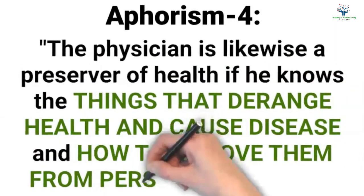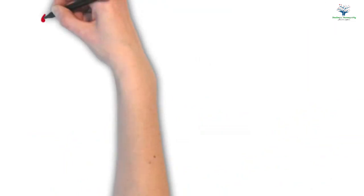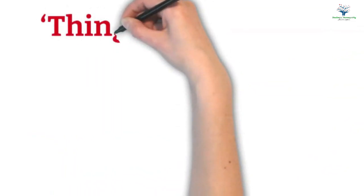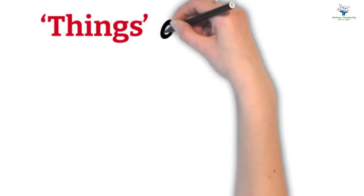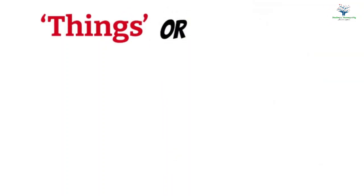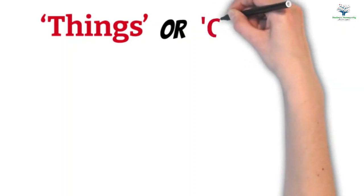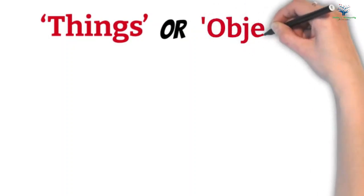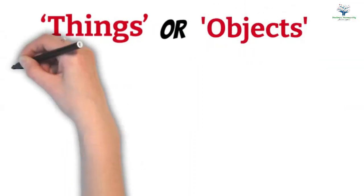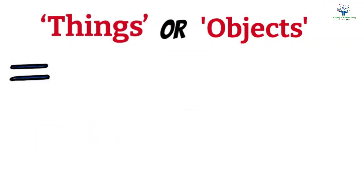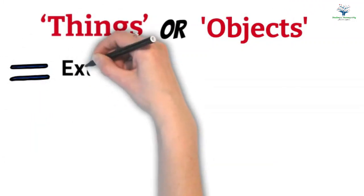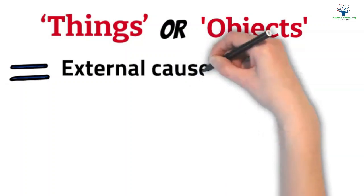Now what are these things that Hahnemann has mentioned in this aphorism? Kent called these as objects that derange health. Then what are these things or objects? Are these the external causes or the material or pathological changes in the body like hemorrhoids, tumors, etc?